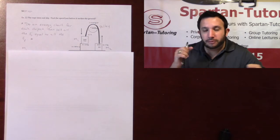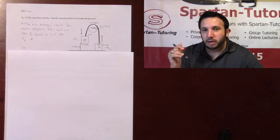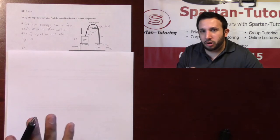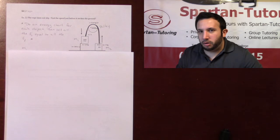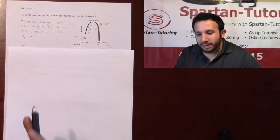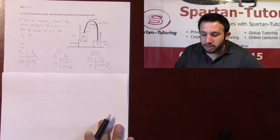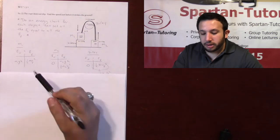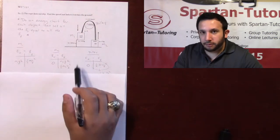And since the rope does not slip, I want to find the speed just before this block strikes the ground. This block being 10 kilograms. This block being 5 kilograms. What you're going to do when you have multiple objects—I have a block 1, a block 2, a pulley—you're going to do a chart for each individual object and then set all the E naughts equal to all the EFs.